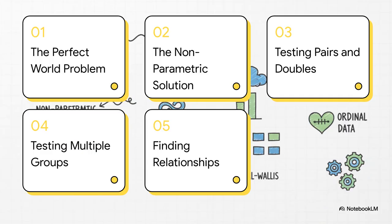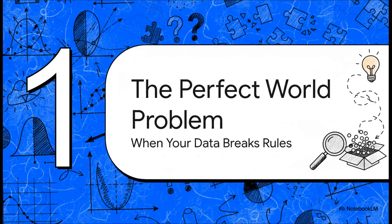So here's our game plan. First, we're going to dig into why that perfect world of statistics often fails us. Then we'll introduce the really elegant solution. And from there, we'll build a practical toolkit you can use to compare groups and find relationships in pretty much any data set you'll ever come across. All right, let's jump right in.